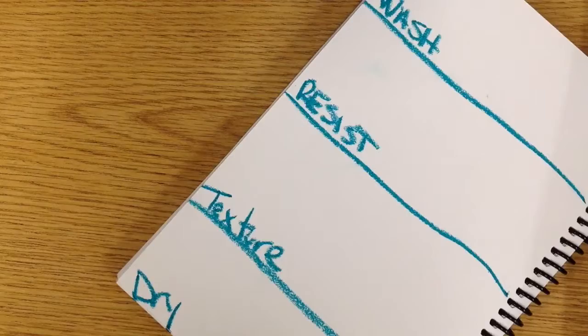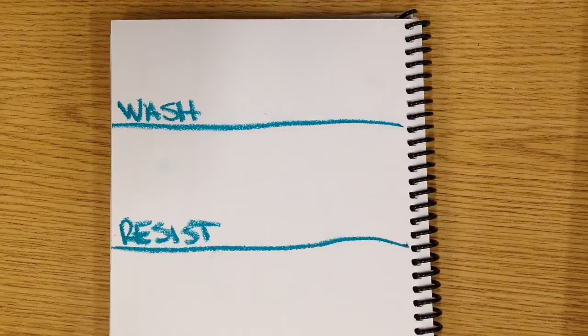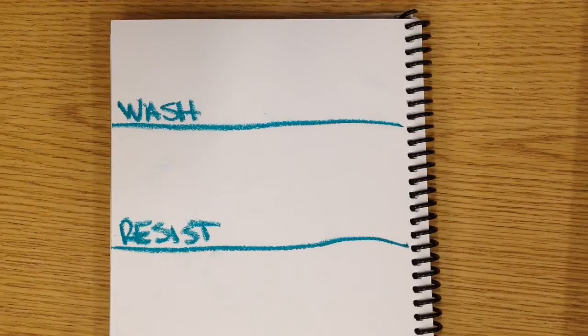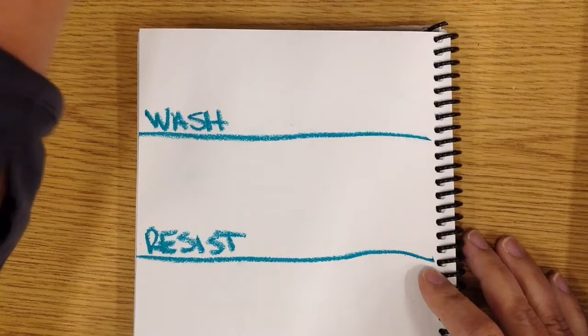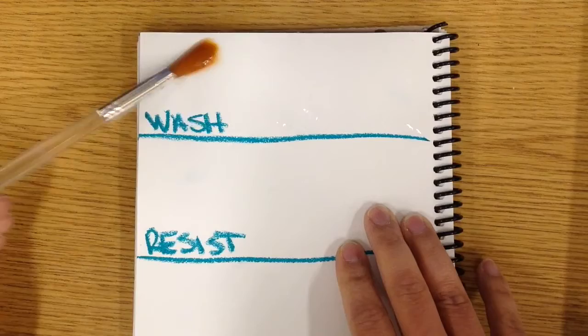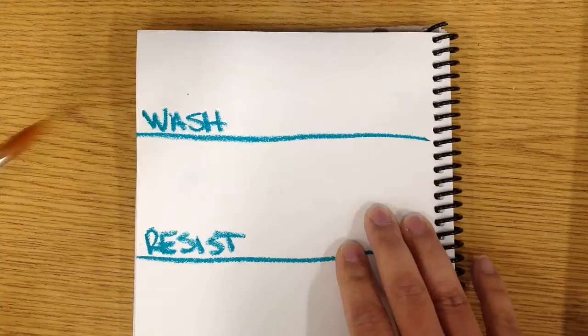For my wash, the very first thing I want to do is make sure that my paper is wet. So when you do a wash, your paper is wet and your pigment and your paint is wet as well. I'm going to take a brush and some water, which hopefully you have on hand. What I've done is I've just taken some clean water and added it to my paper to saturate it.